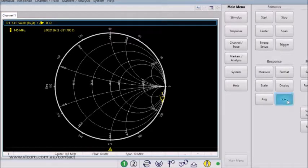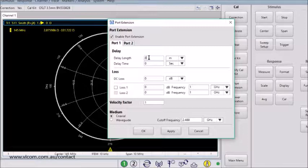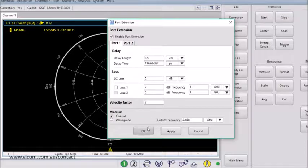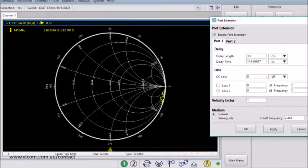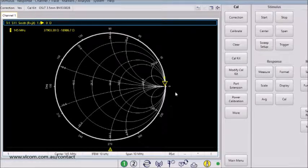So, I'll go to Cal, Port Extension, Enable. Let's try three and a half centimeters. And click Apply. Let's see where this puts us. Almost there. Let's try a little bit more. All right. And there we go. So, now we've properly moved our calibration plane so it's aligned with where we're going to place the matching network.